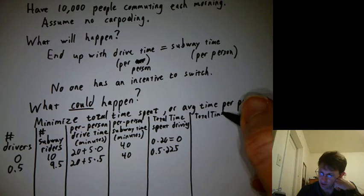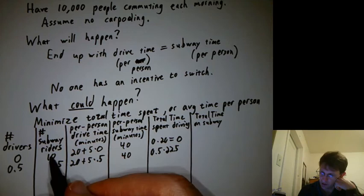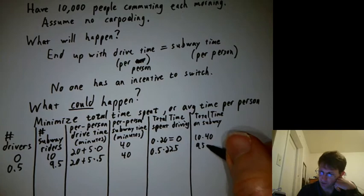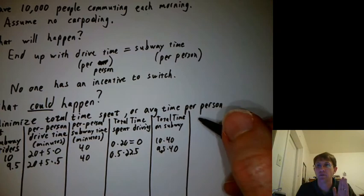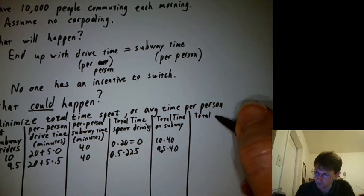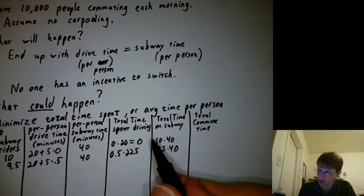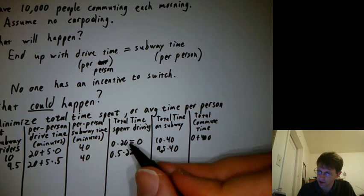Then we'd have total time on the subway. Here it would be 10 times 40. Here it would be 9.5 times 40. And then you could say, what's the total overall time people spent on commuting? Here it would be the zero plus the 400. Here it would be whatever this is, plus whatever that is.